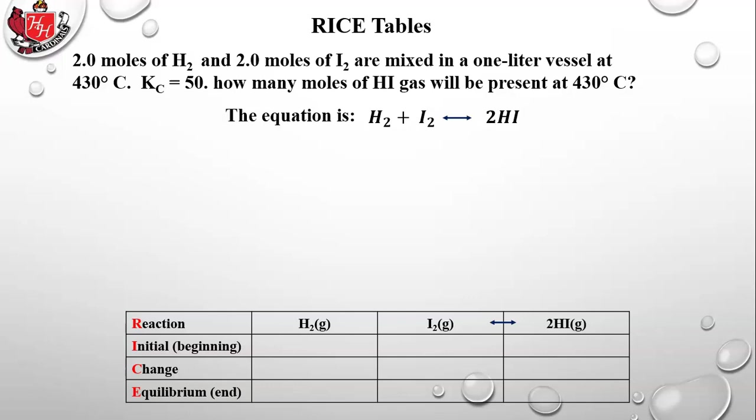Let's take a problem. We're going to start with two moles of H2 and two moles of I2 mixed in a one-liter vessel, so that means it's also two molar of each, since it's two moles per liter. We're going to say it's at 430 degrees. The significance of the temperature is that it can't change — they're just saying that temperature is constant.